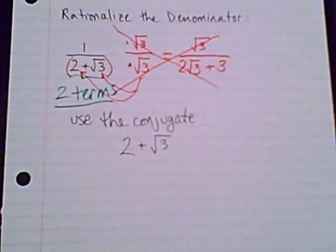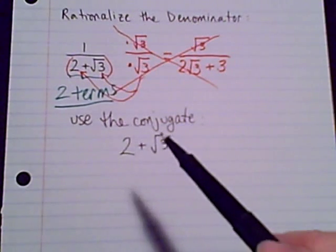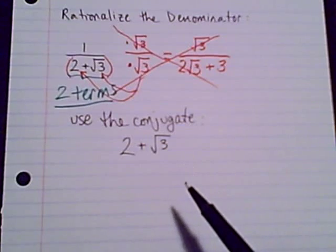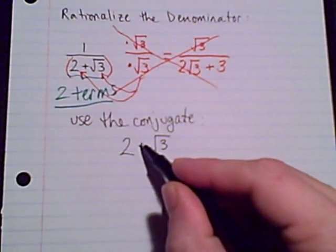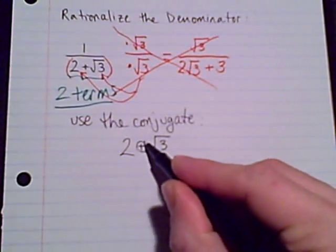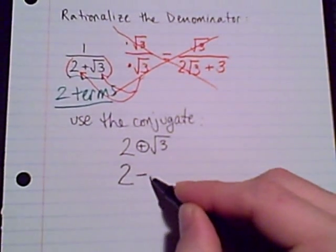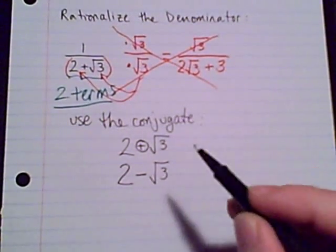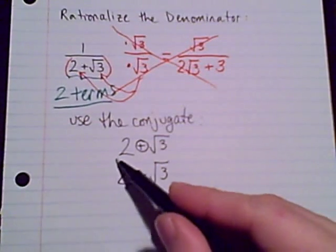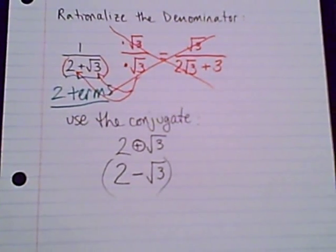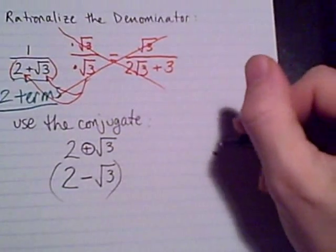To find the conjugate, we look at our two terms, the 2 plus radical 3, and all we want to do is change the sign in the middle. If it's an add, we will change it to a subtract. If it's a subtract, we will change it to add. So that is our conjugate. Let's go through just a few quick ones.